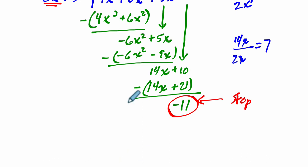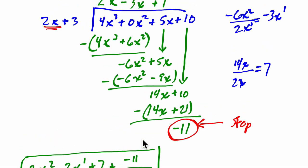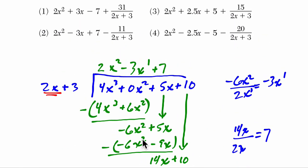And that means, what is the answer? That means that if we divide these two things, we get a quotient of 2x² minus 3x to the first plus 7 with a remainder of negative 11 out of our divisor 2x plus 3. This is how we set up. So this is one common way to set up a long division answer. And that is choice 2.